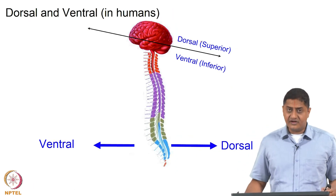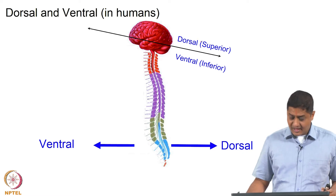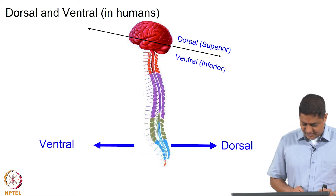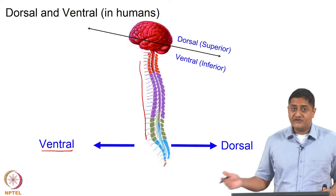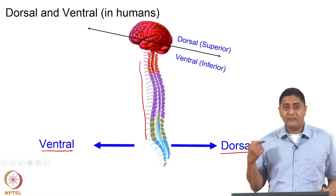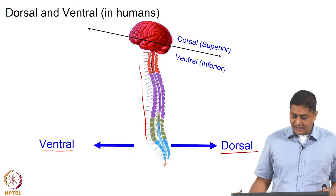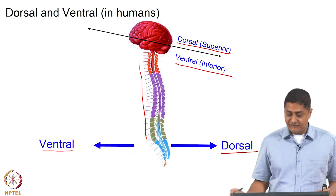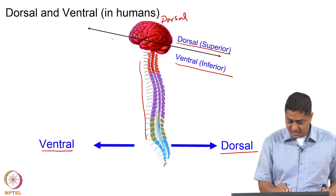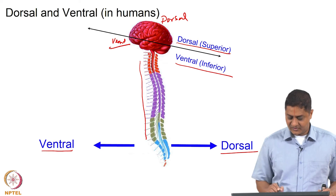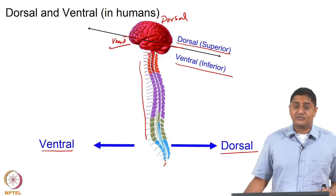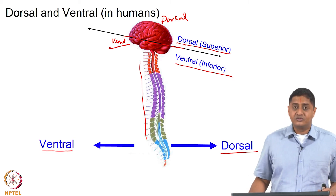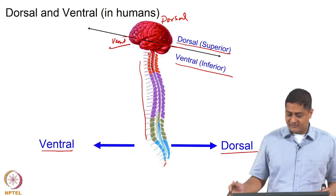In humans, dorsal and ventral refer to two different things. In the spinal cord, ventral refers to a similar situation as in animals. Dorsal means the part of the body facing the floor — so dorsal is the back — whereas in the brain, dorsal usually refers to superior and ventral refers to inferior. This change occurs at the junction of the brainstem and diencephalon; below that level dorsal and ventral refer to the spinal cord convention, and above that level it is different.